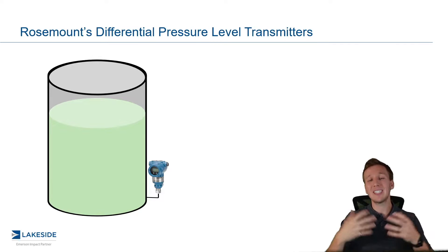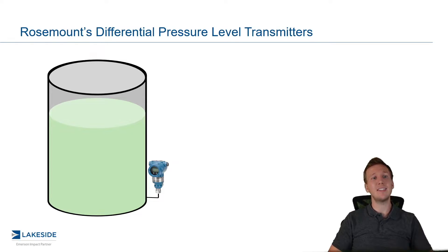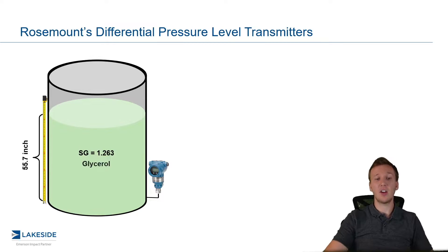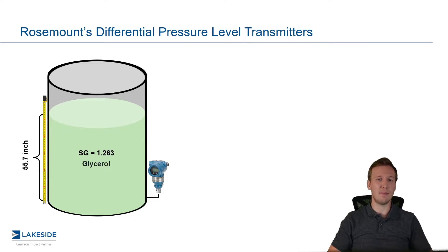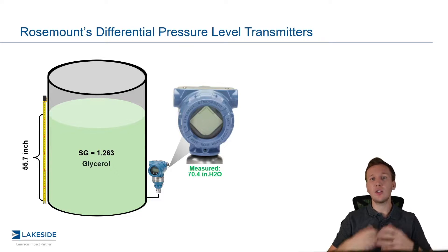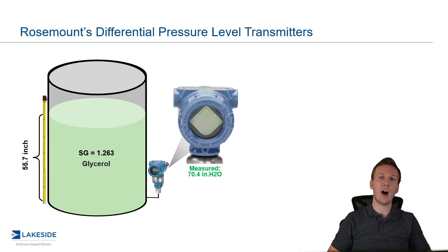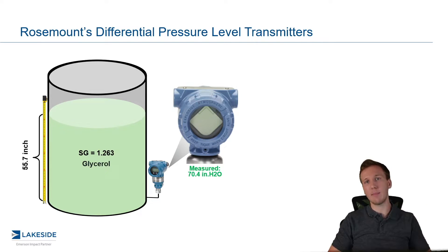If we look at one of the most simple applications, it is an open to air or a vented vessel. What this means is all we have is atmospheric pressure above the liquid. In this case, let's say we have 55.7 inches of glycerol. I picked glycerol because it is denser than water, so it's going to make these calculations a bit more fun. Now if we look at what the gauge pressure transmitter is reading, it's going to read 70.4 inches of water. Now we don't have water, we have glycerol. This is why we are reading a measurement greater than what is actually the volume occupying this vessel.